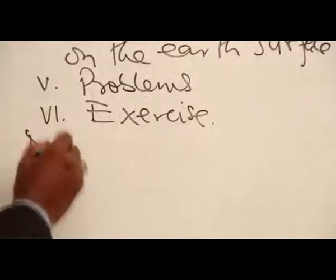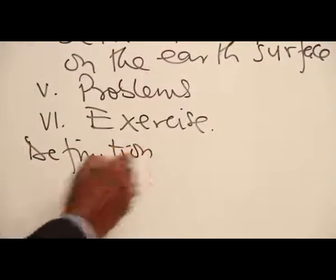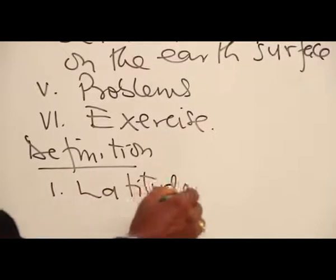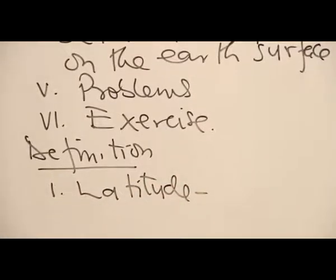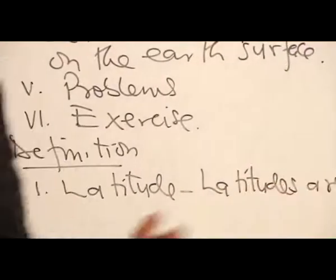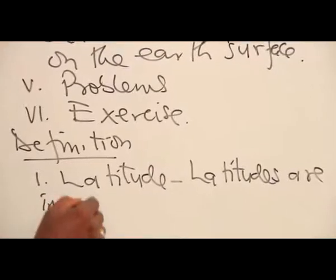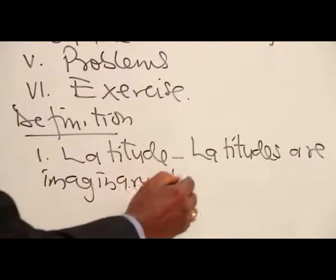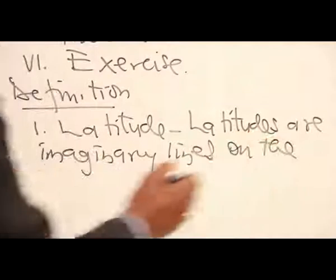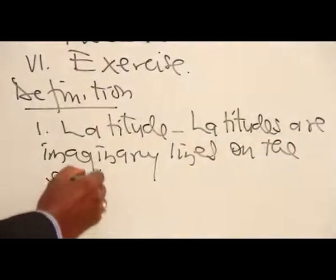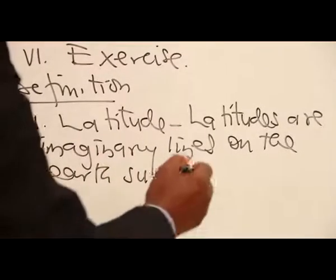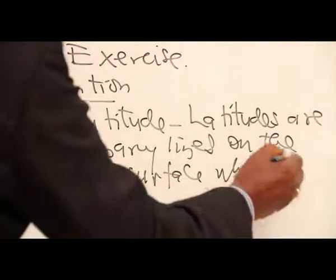Definition. One. Latitude. Latitudes are imaginary lines on the earth surface which is spherical.